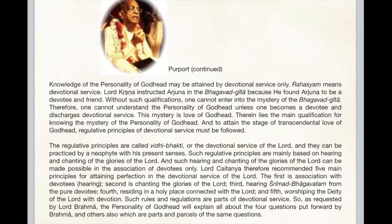To attain the stage of transcendental love of Godhead, regulative principles of devotional service must be followed — these are called vidhi bhakti. Such regulative principles are mainly based on hearing and chanting of the glories of the Lord, and such hearing and chanting can be made possible in the association of devotees only. Lord Chaitanya therefore recommended five main principles: first, association with devotees and hearing; second, chanting the glories of the Lord; third, hearing Srimad Bhagavatam from the pure devotee; fourth, residing in the holy place connected with the Lord; fifth, worshiping the deity of the Lord with devotion.